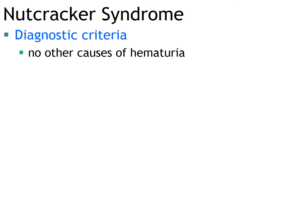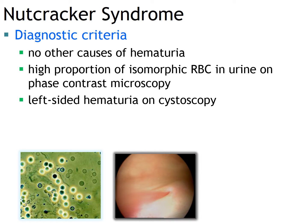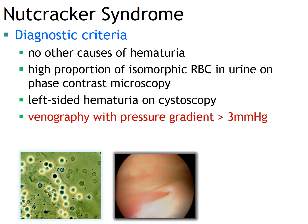What are the current diagnostic criteria of nutcracker syndrome? Of course, there should be no other causes of hematuria. A high proportion of isomorphic RBCs in urine on phase contrast microscopy — meaning the morphology of urine RBCs in nutcracker patients is similar to RBCs in peripheral blood. Hematuria should come from the left side on cystoscopy. And final diagnosis should be made at venography with a pressure gradient greater than 3 mmHg, but this is an invasive procedure.